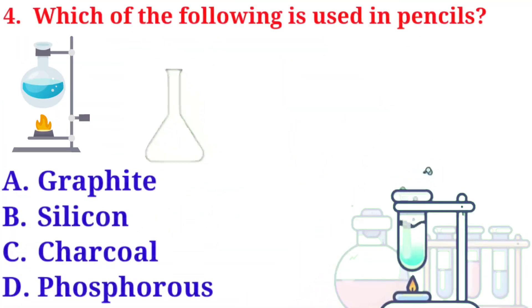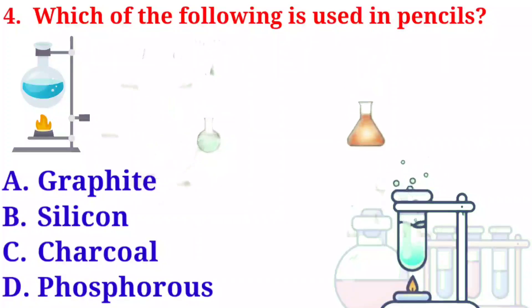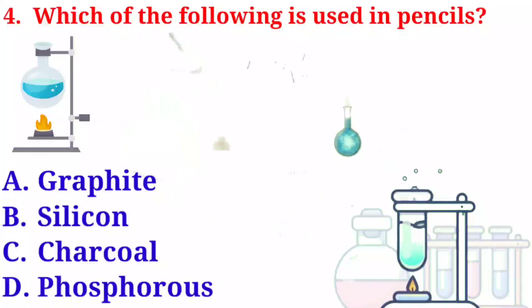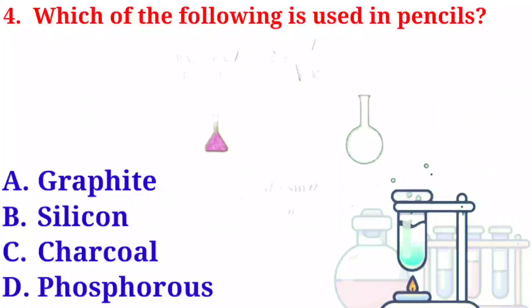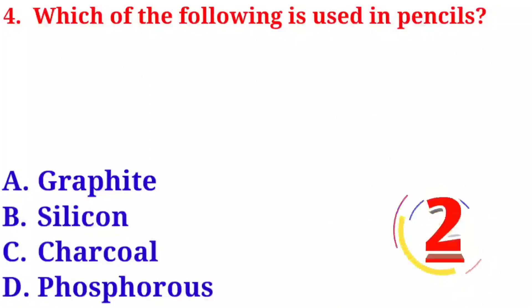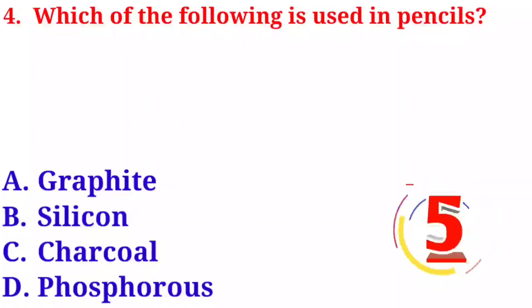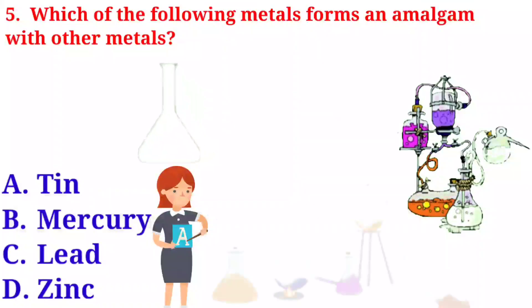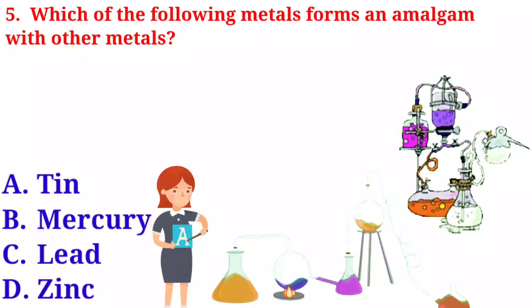Question number four: which of the following is used in pencils? Option A: graphite. Option B: silicon. Option C: charcoal. Option D: phosphorus. The correct answer is option A, graphite.